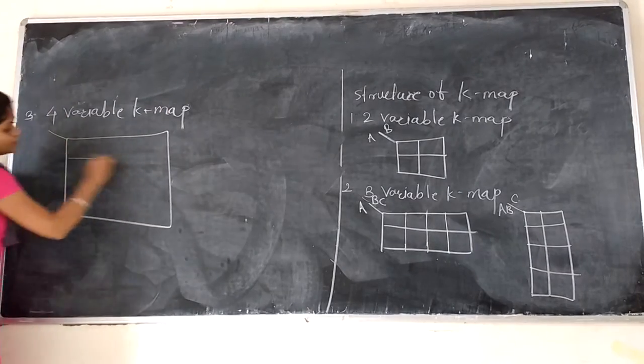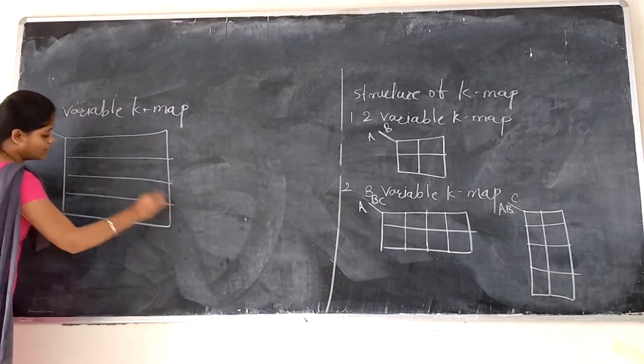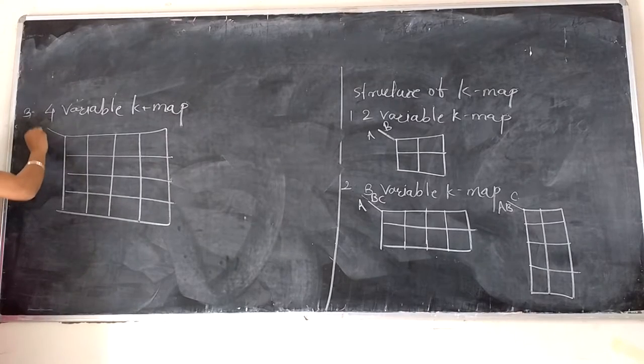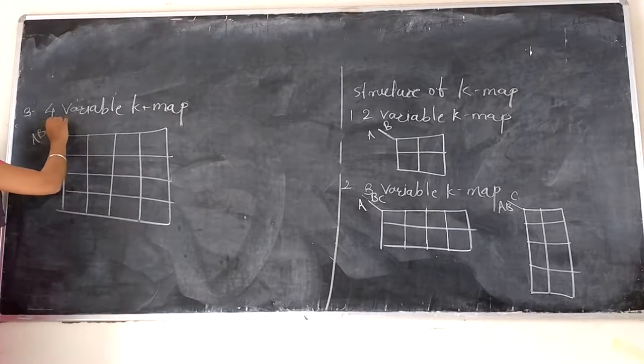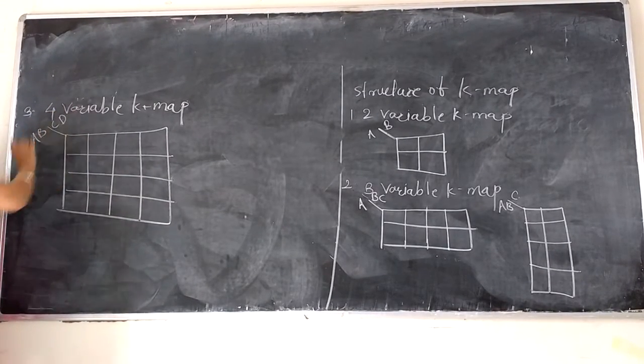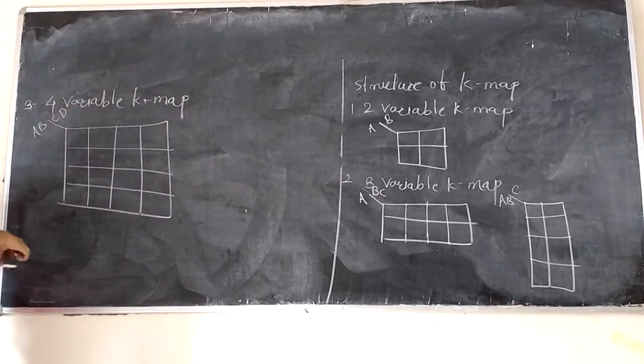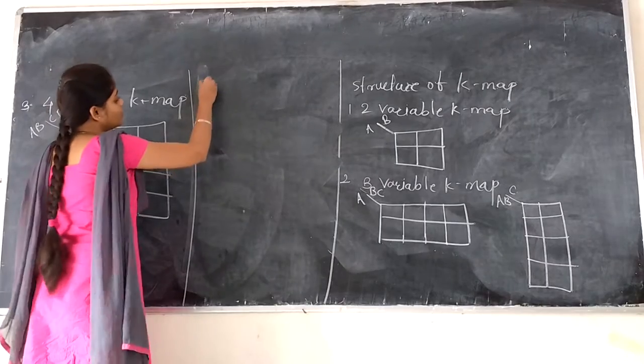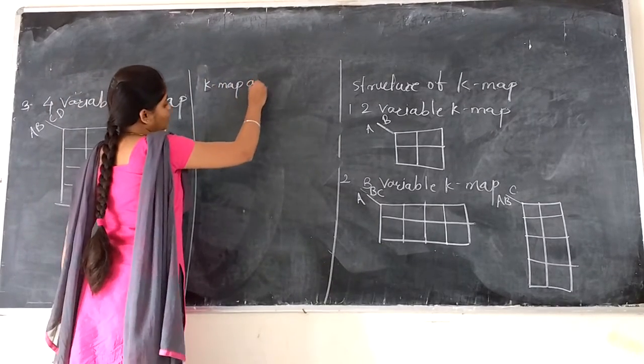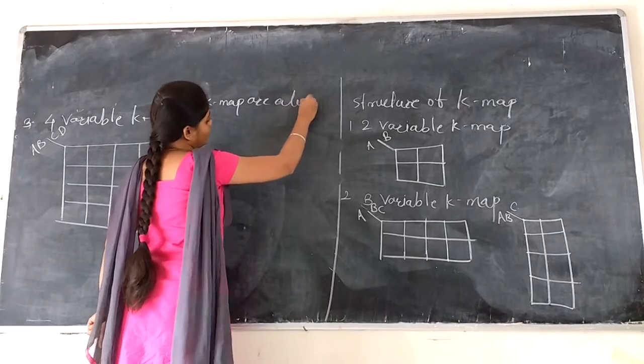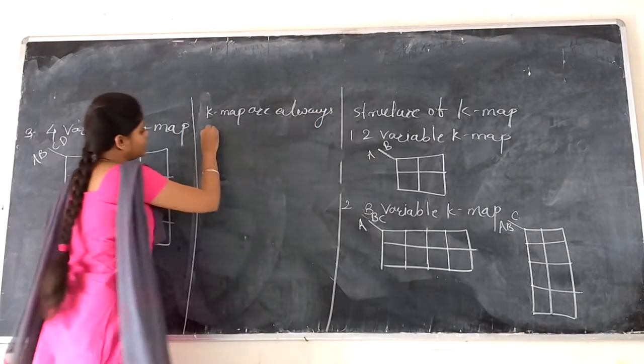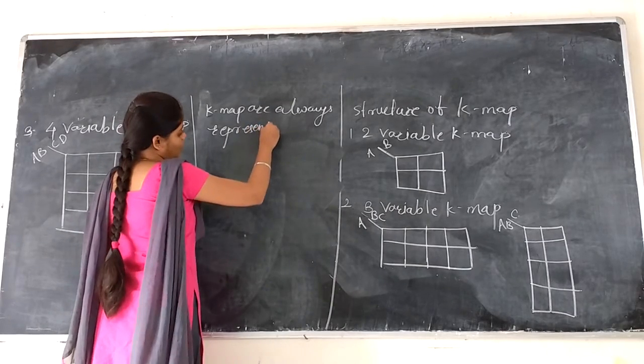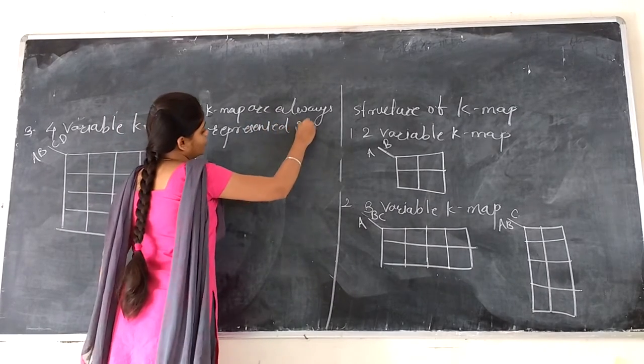Two variables are represented on rows and two variables are represented on columns. Now, for K-maps, you should remember one thing: the maps are always represented in Gray code form.